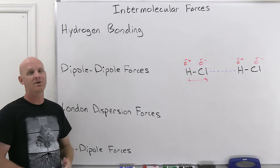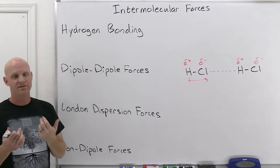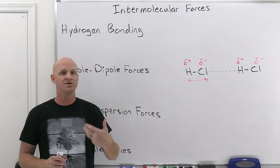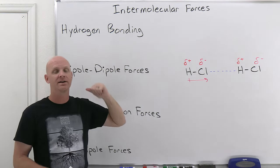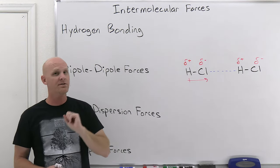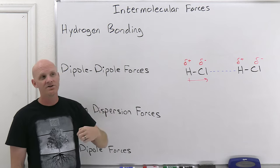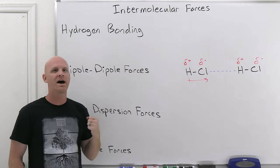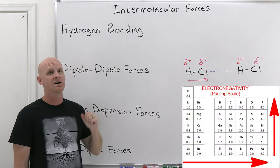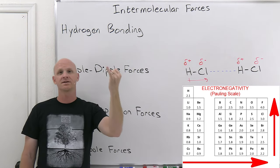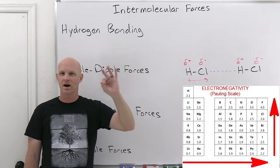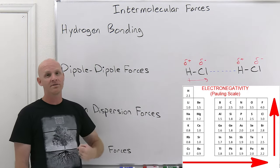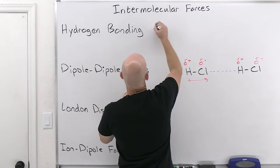Hydrogen bonding turns out to be like a super-duper strong dipole-dipole force. There are only three different kinds of molecules that have these super-strong dipole-dipole forces that we call hydrogen bonding. The bond dipole has to involve hydrogen bonded to one of three small and very electronegative atoms: fluorine (most electronegative), oxygen (second most electronegative), and nitrogen. So you need an F–H bond, an O–H bond, or an N–H bond somewhere in the structure to be capable of hydrogen bonding.